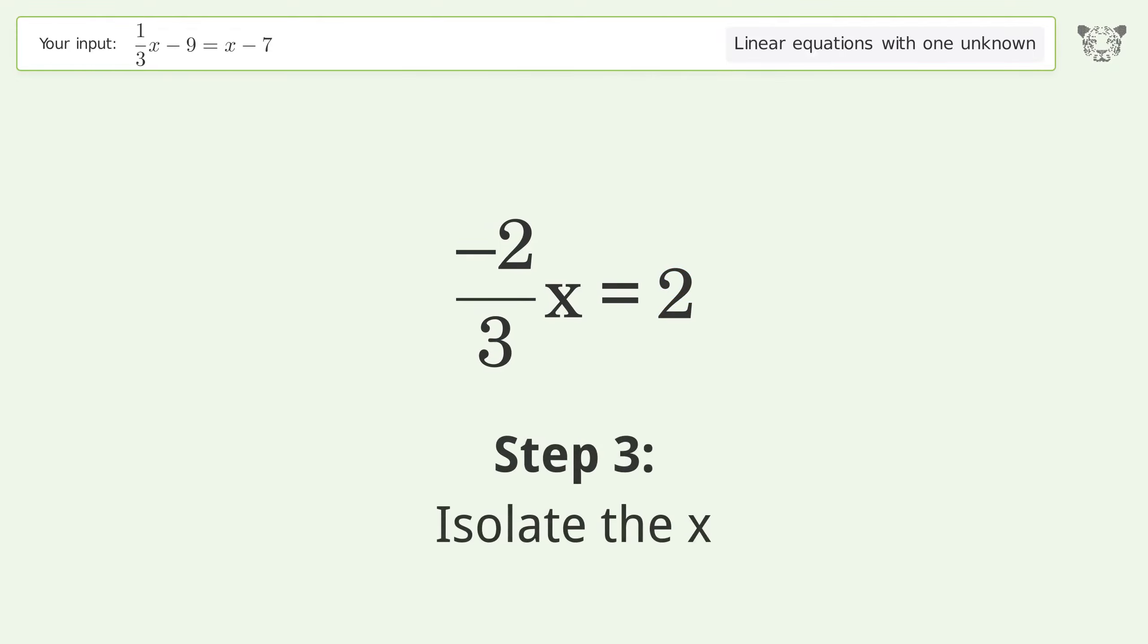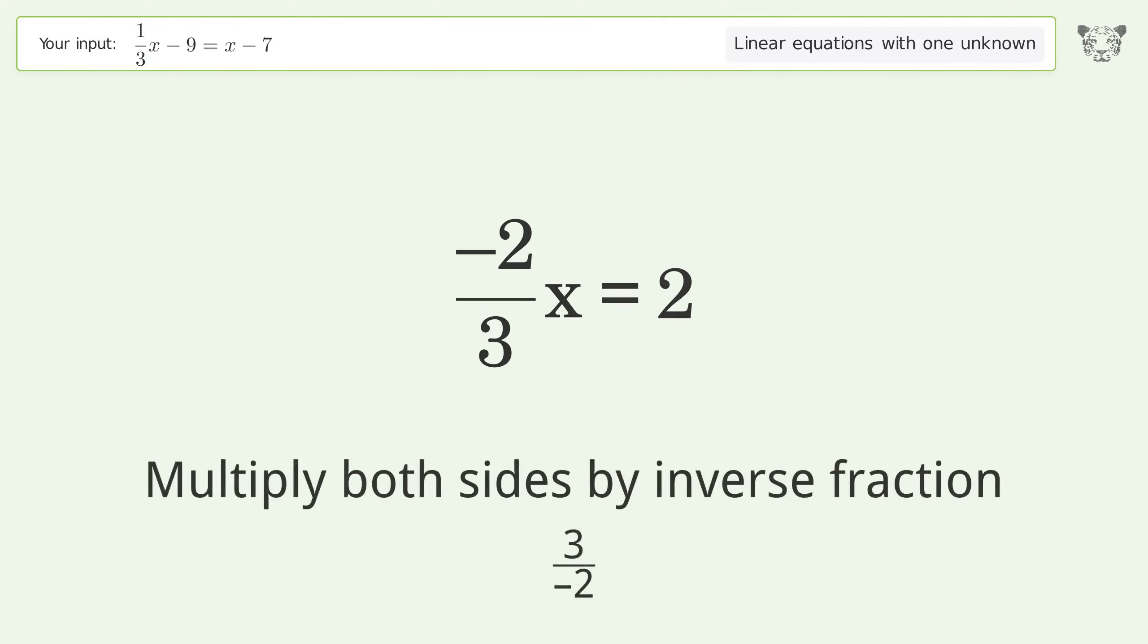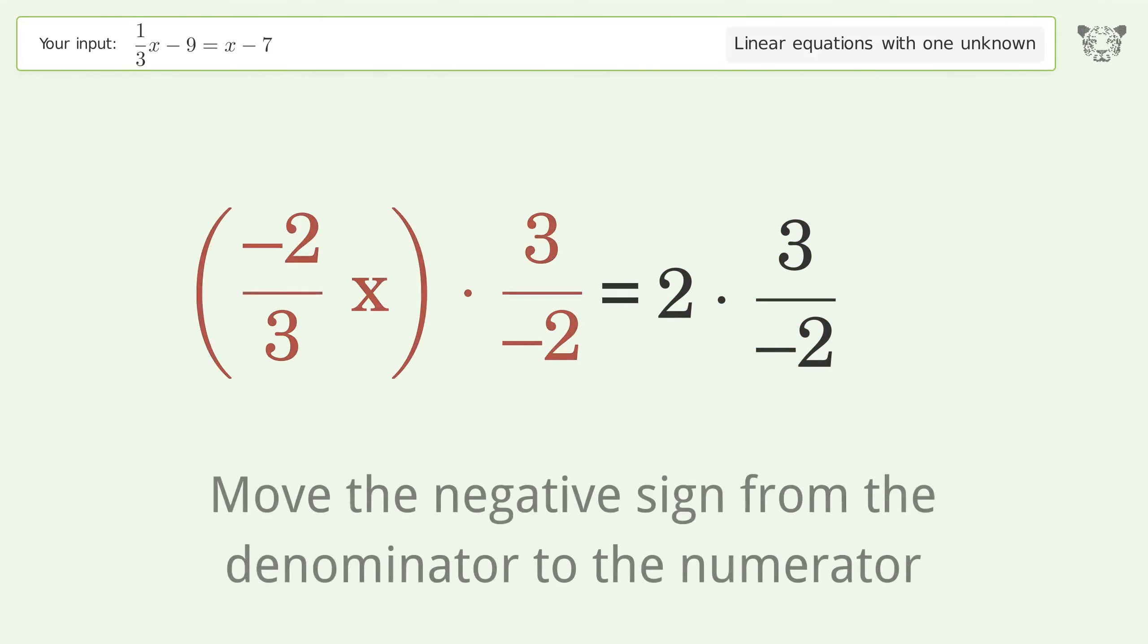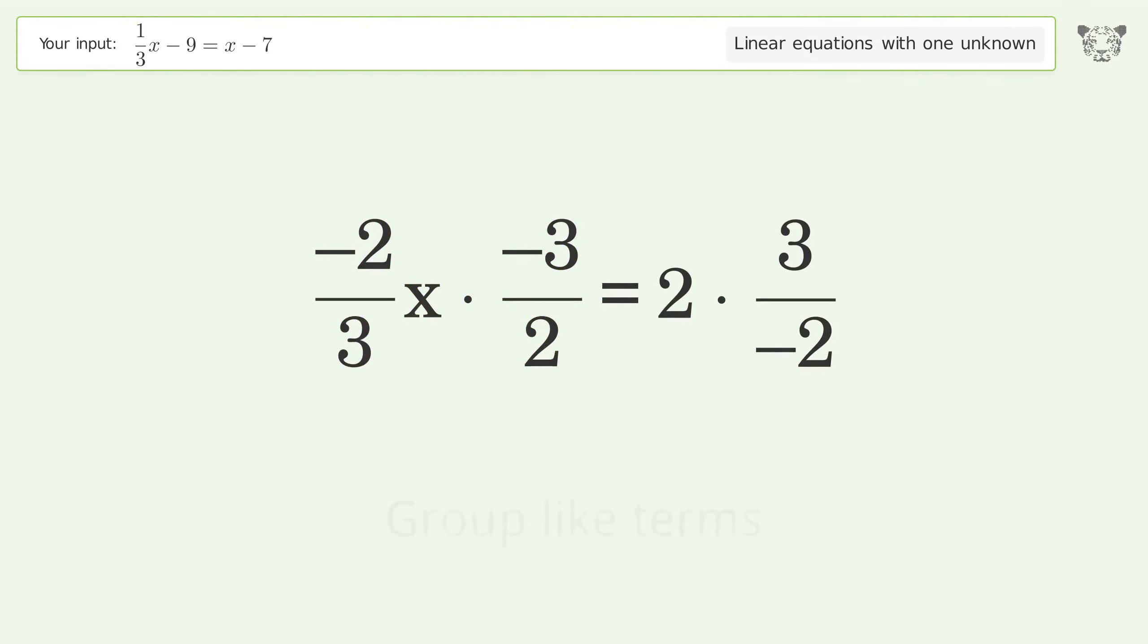Isolate the x. Multiply both sides by inverse fraction 3 over negative 2. Move the negative sign from the denominator to the numerator. Group like terms.